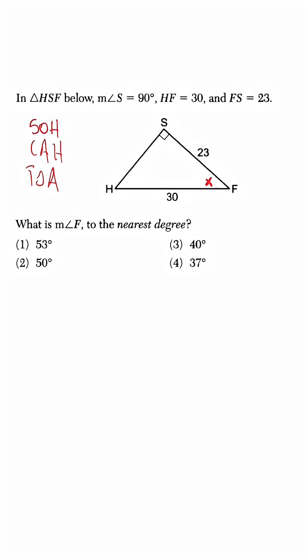Based off the information here, we know that relative to angle F, this is the adjacent side, opposite side, and then we have the hypotenuse. So based off this, we know that we're going to be using cosine.